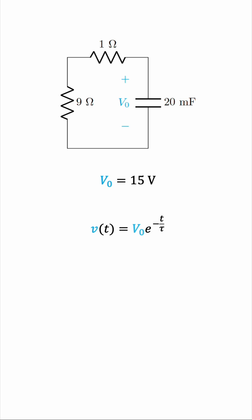We know V zero is 15 volts, and tau is given by RC, as we concluded in the previous video. But now the question is, which R should we take? Is it the 1 ohm resistor or the 9 ohm resistor? In fact, it's the equivalent resistance that the capacitor sees, which is 10 ohms in this case, the series combination of 1 and 9.